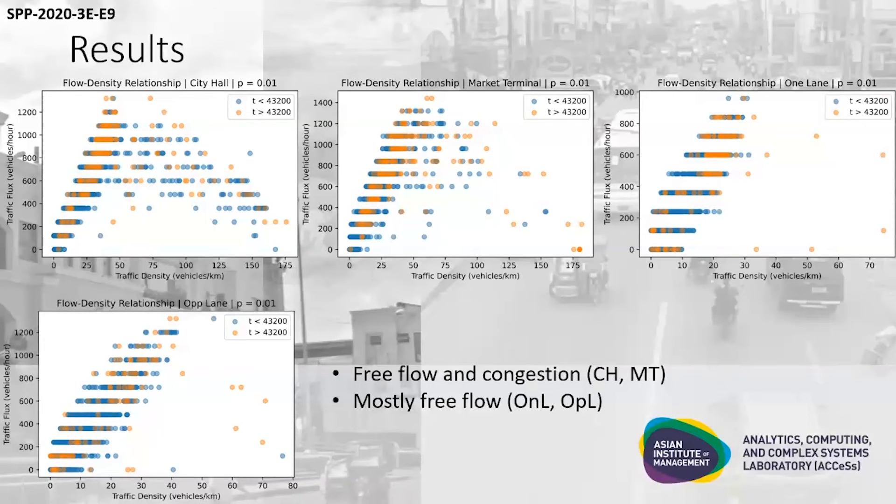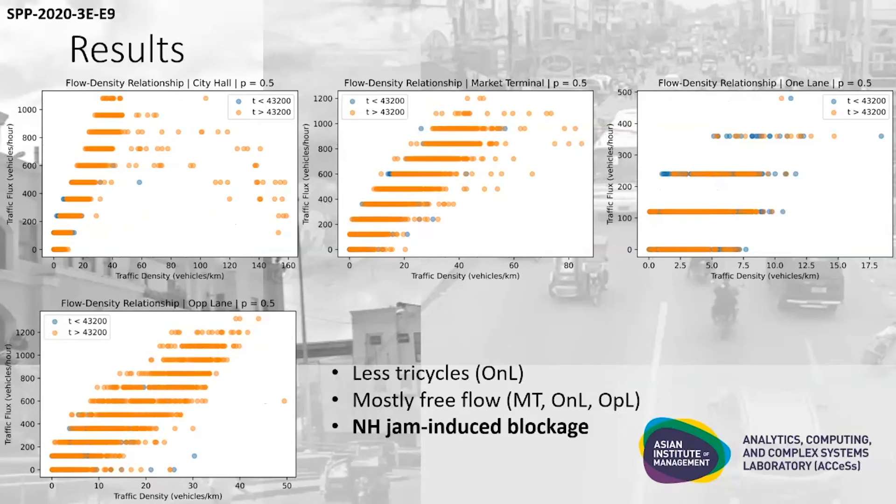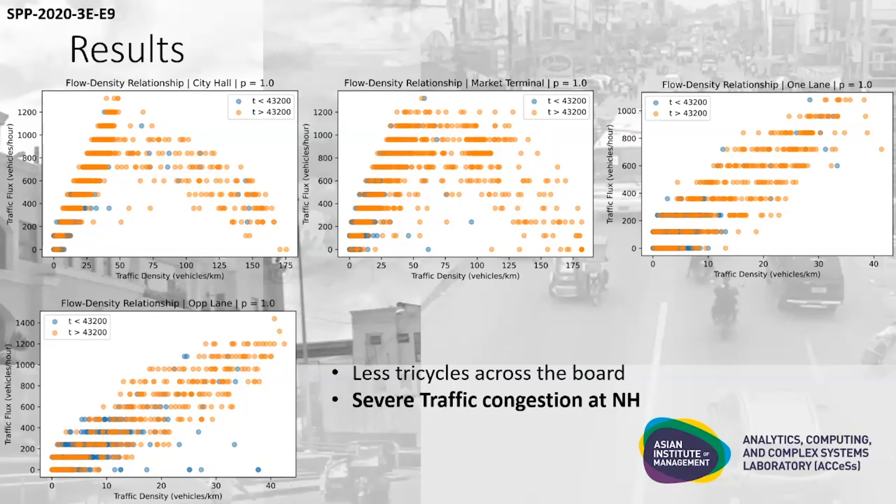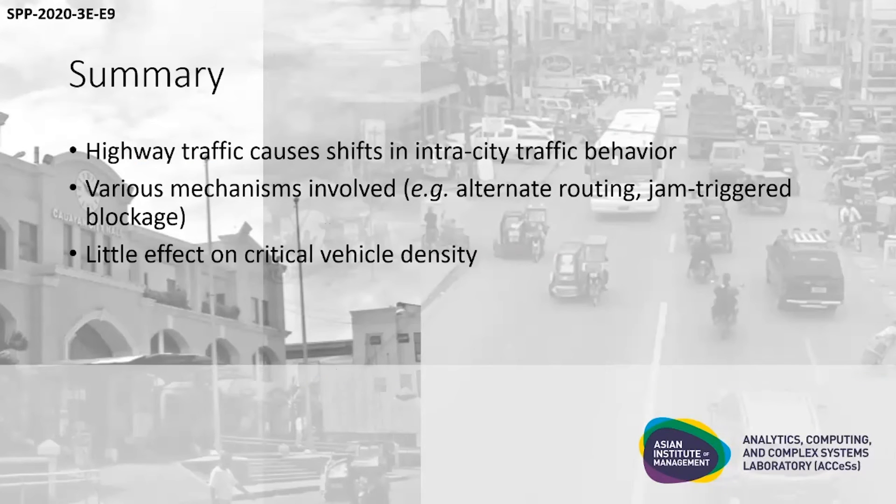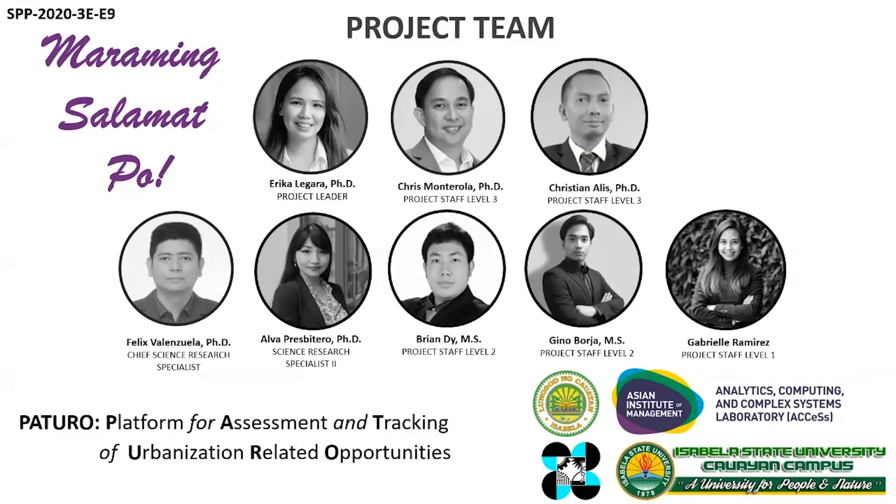We plotted fundamental diagrams for each location P. For light highway flows, we observed typical behavior in two locations and mostly free flow in the others. For medium highway flow, its effects, particularly from jamming just blockage and rerouting, begin to set in. And finally, for heavy traffic, due to severe congestion at the national highway, fewer tricycles get to pass across the board. Now to answer the question of interaction between within-city and long-haul traffic flows, we observed shifts in intracity flow involving various mechanisms. However, it seems like other quantities such as critical density aren't affected. We're actually doing further research on this front, as part of the DOST PSHURED project titled Platform for Assessment and Tracking of Urbanization-Related Opportunities. Thank you very much for your time.